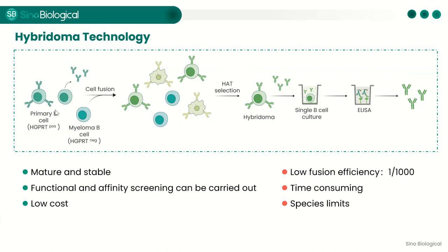Single cell suspensions are prepared from the immune organ—usually the spleen of an immunized animal—and fused with myeloma cells. Common fusion methods include PEG-mediated fusion and electrofusion, the latter showing higher fusion efficiency. Three types of cells exist in the fusion system: unfused spleen cells, myeloma cells, and fused hybridomas. The hybridomas formed by B cell–myeloma fusion are obtained by HAT selection and then screened with ELISA to obtain positive clones. Further dilution and screening yield immortalized monoclonal hybridomas that stably produce single antibodies.